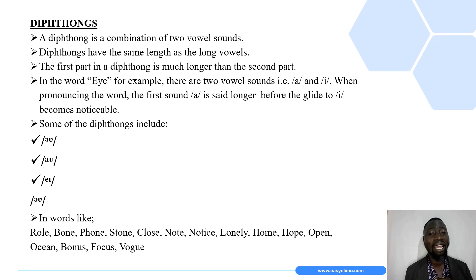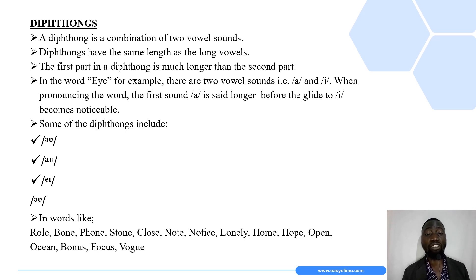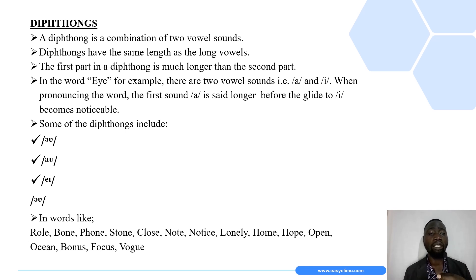A diphthong is a combination of two vowel sounds. When we talk about vowel sounds, remember there are only five: A, E, I, O, and U. So if a word is said to be a diphthong, it must have a combination of two vowel sounds. Diphthongs have the same length as the long vowels.